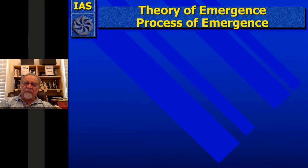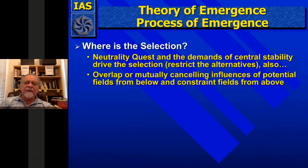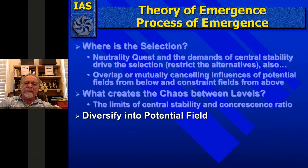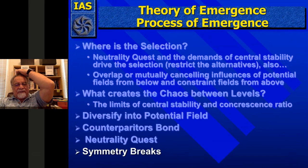That creates a symmetry break — which is big in physics — resulting in a new scalar level of aggregates that appear on the log charts. We don't see the connecting entities in between because they're unstable. Where is the selection? The neutrality quest and the demands of central stability drive the selection — they restrict the alternatives. What creates chaos between the levels? We can't see what happens in those unstable things. The limits of central stability and concrescence ratio are all we can see.